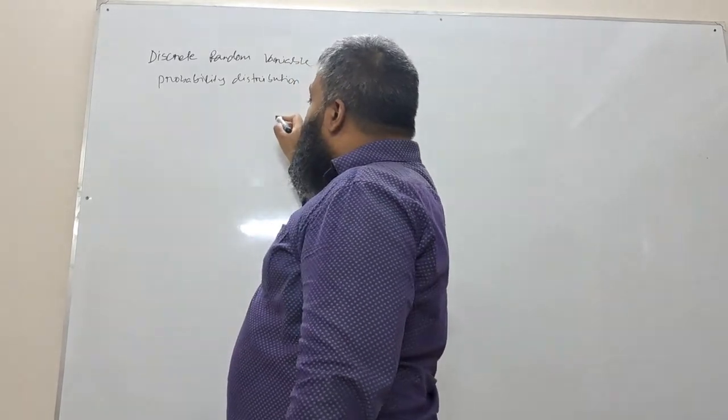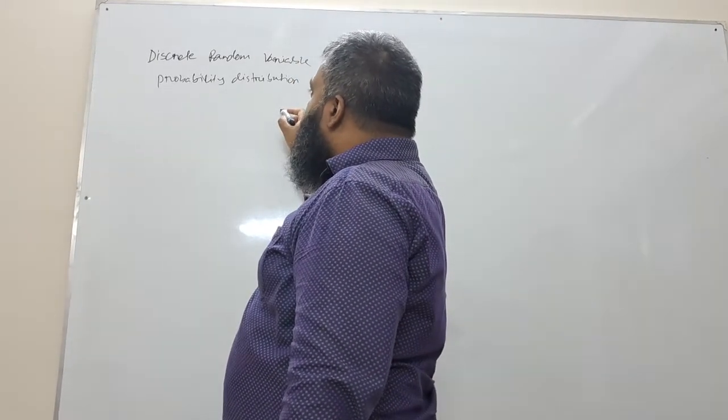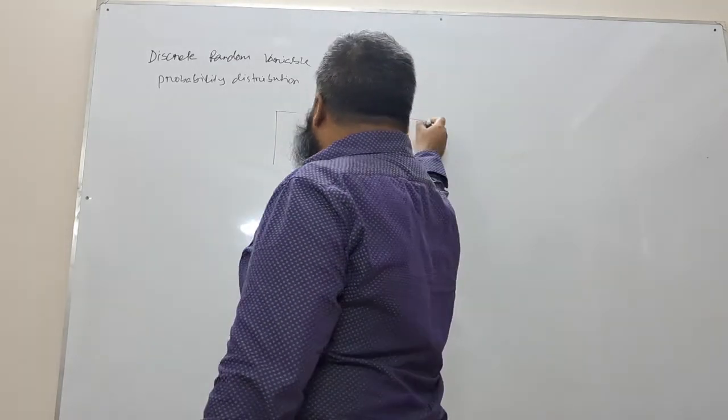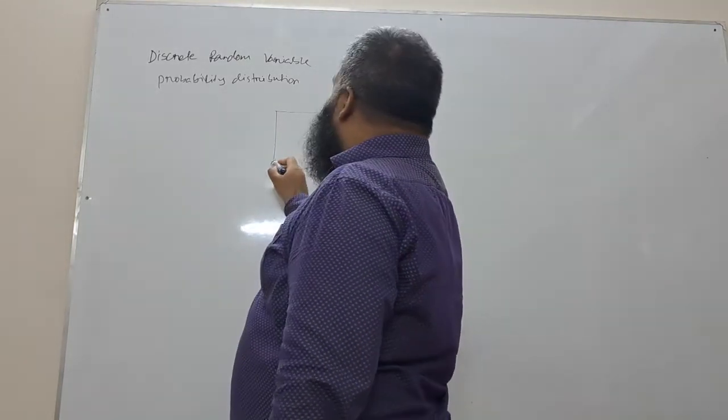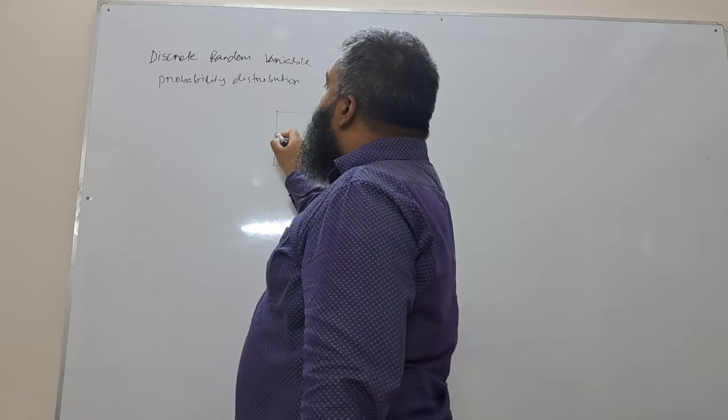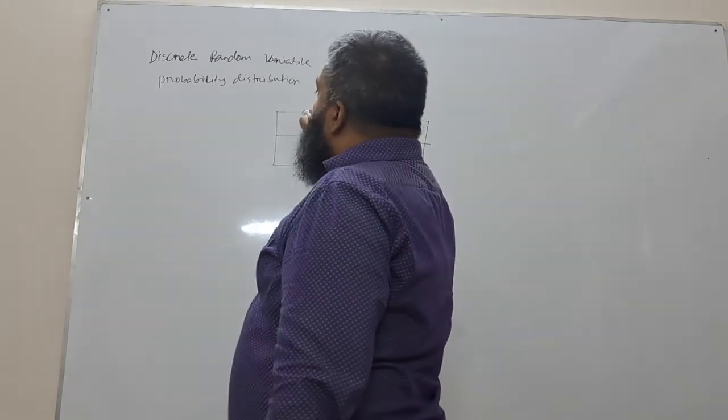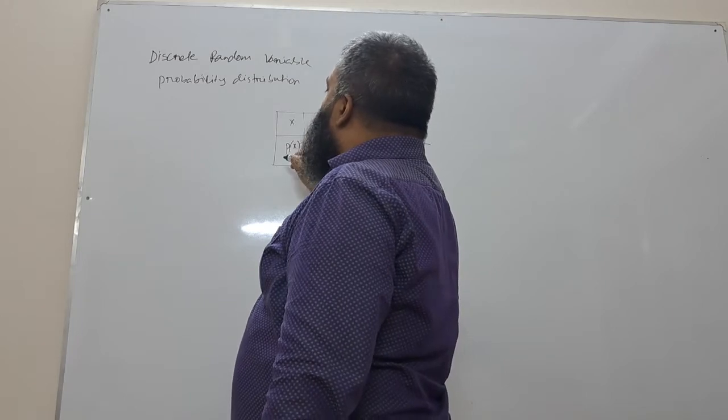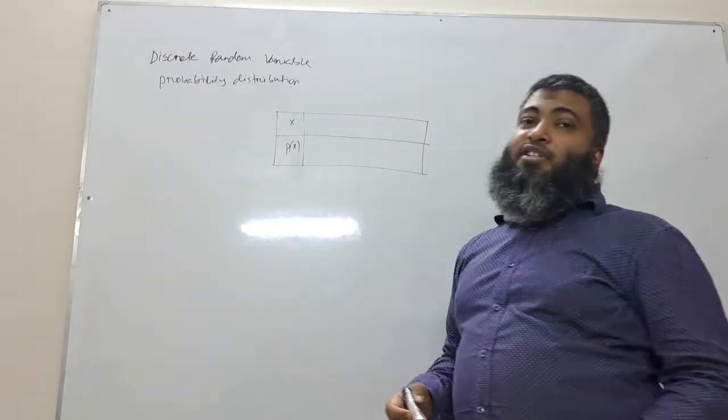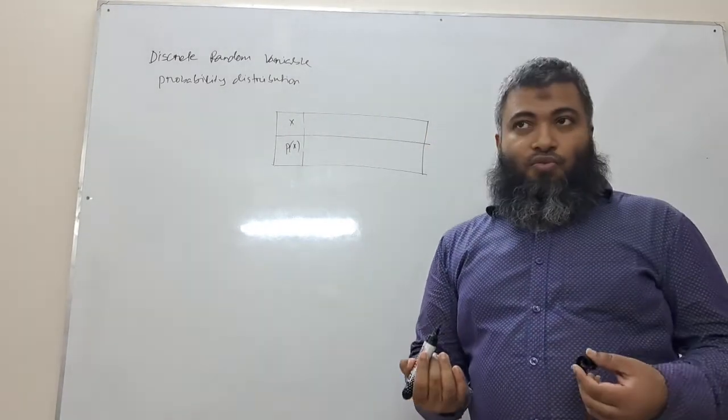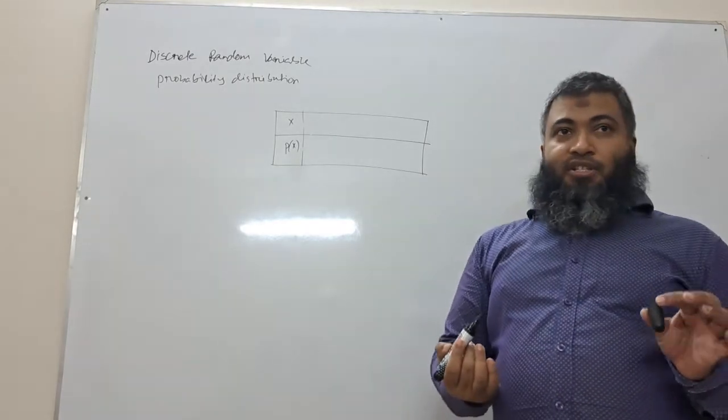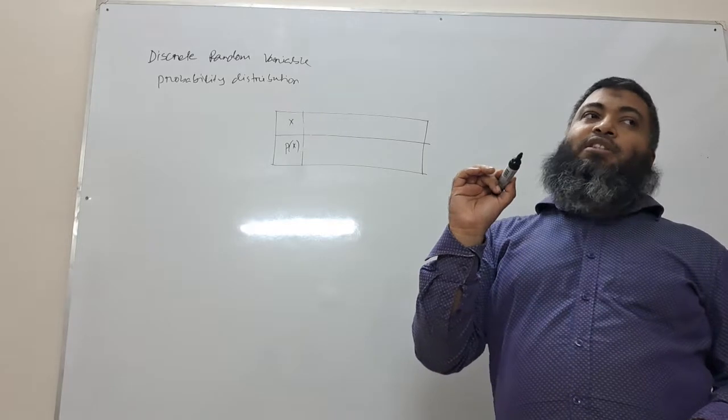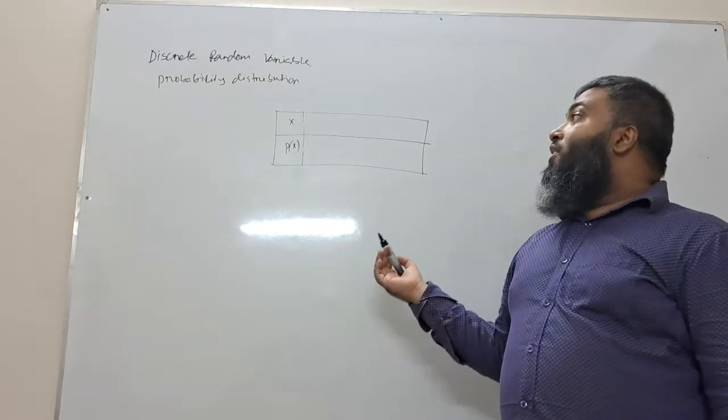First, let us take an example. We are going to take a fair die. For a fair die, each outcome has probability one by six.